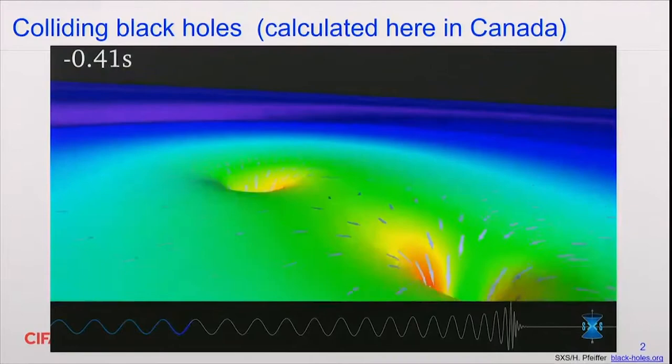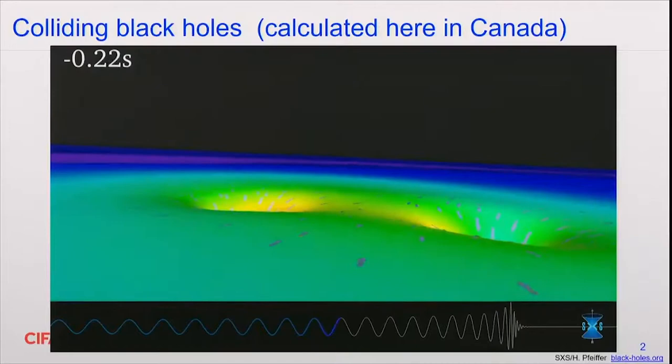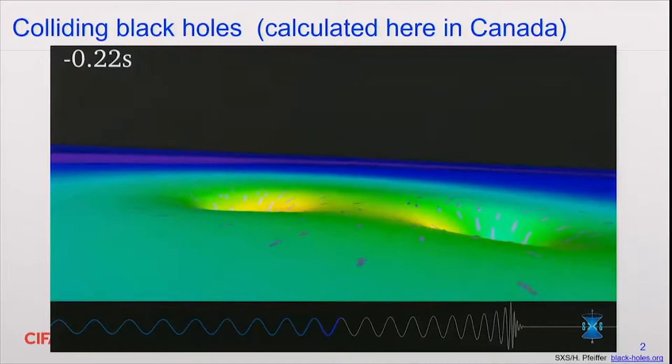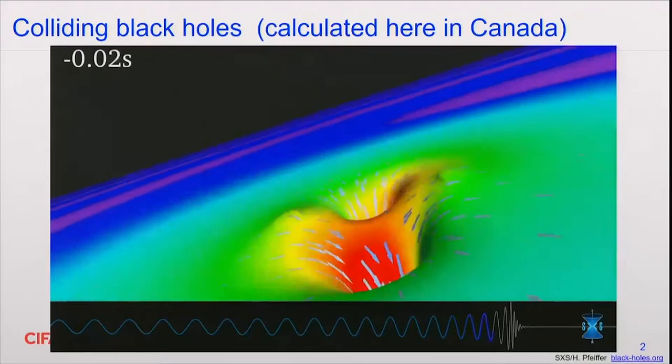Black holes are regions of space and time with ever-increasing curvature — they are vacuum. You can see the presence of the black hole in the curvature of this plane rotating around as the two black holes orbit each other. This is a computer calculation performed here in Canada that tells us what happens when black holes collide and the characteristic gravitational wave shape they emit when colliding.